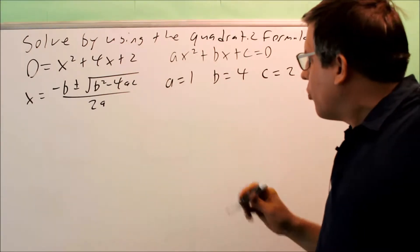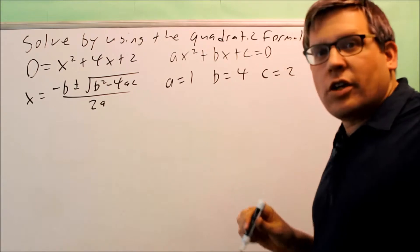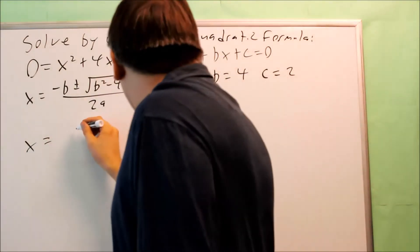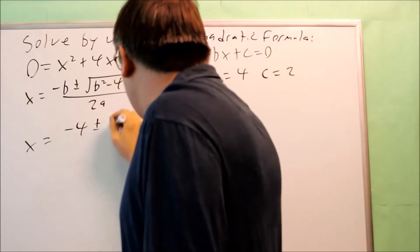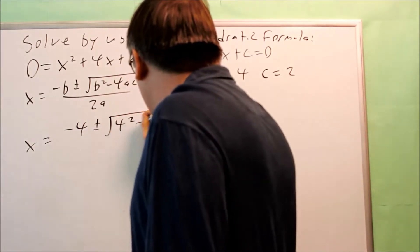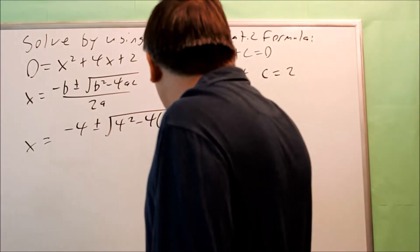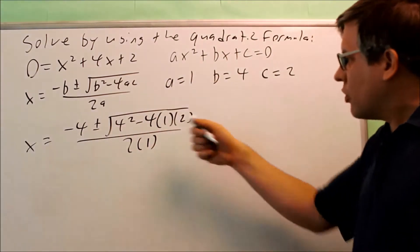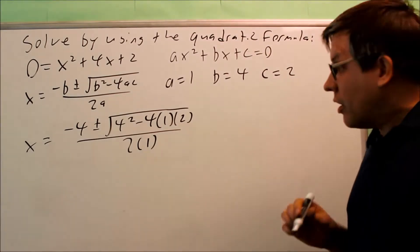To do this by quadratic formula, you just take all these numbers and you put it directly into the formula, and we're going to simplify it. So I get negative 4 plus or minus 4 squared minus 4 times 1 times 2. All that's going to be over 2 times 1. So here it is with all the numbers put in there.